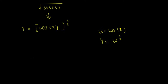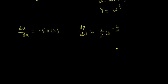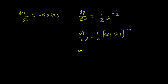According to the chain rule, take the derivative of u with respect to x first: du/dx equals the derivative of cos. Next, take the derivative of y with respect to u: dy/du equals 1 half u to the power of negative 1 half. Since u equals cos, replace u so dy/du equals 1 half cos to the power of negative 1 half.